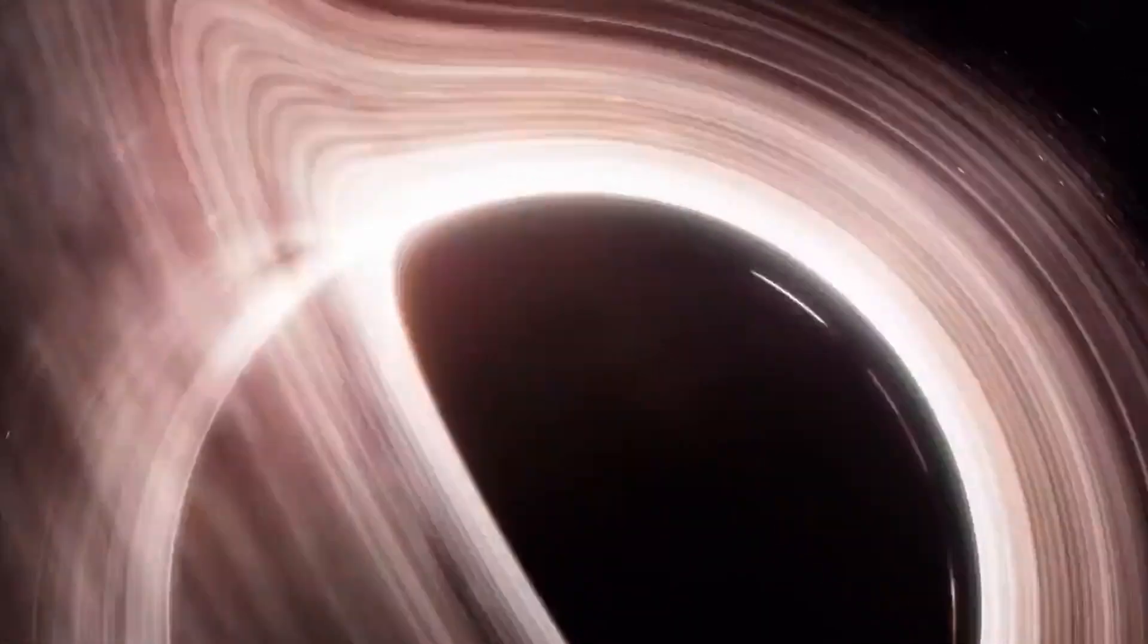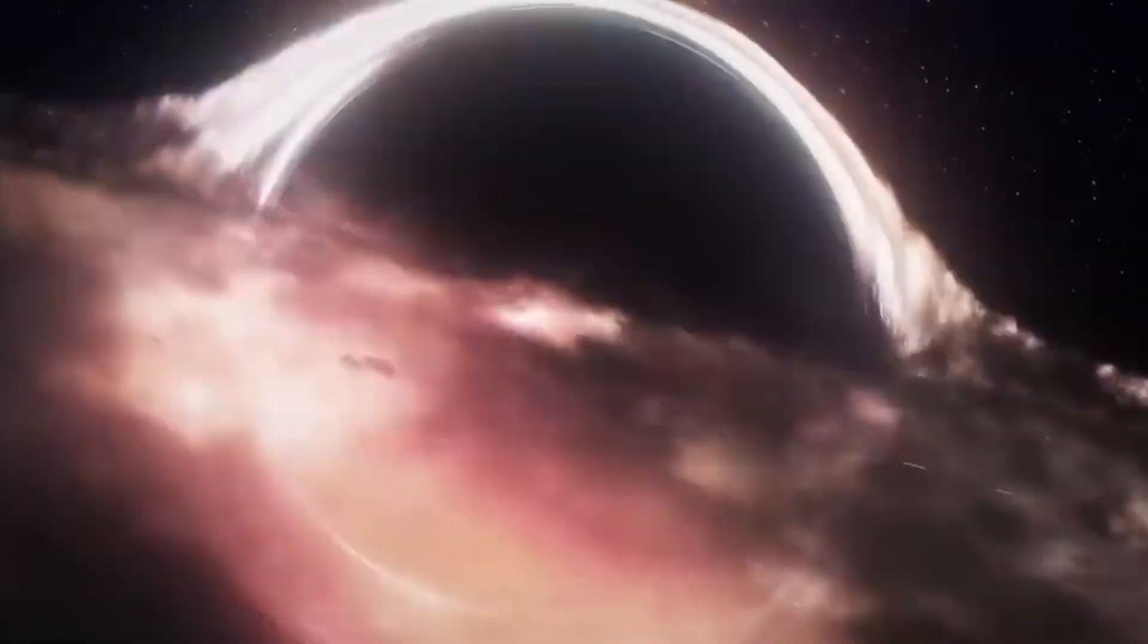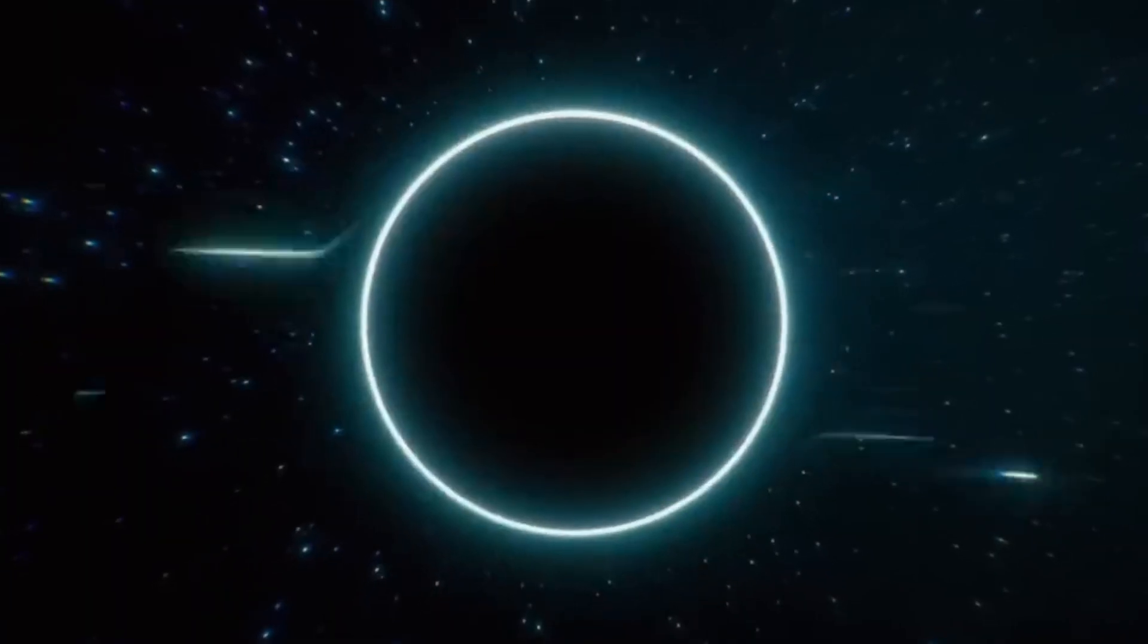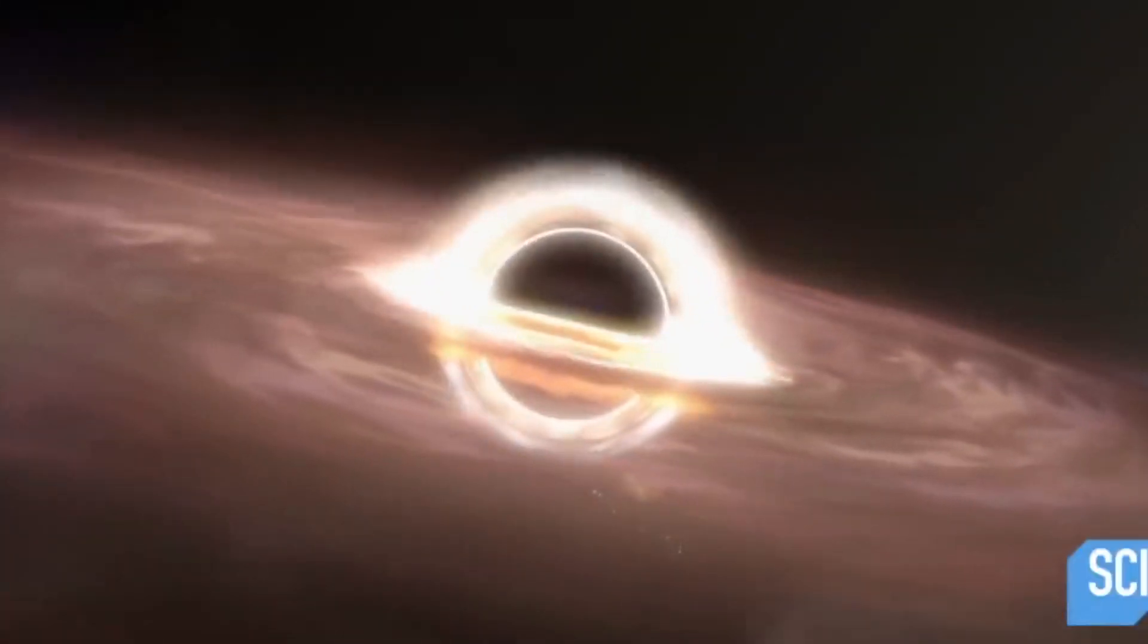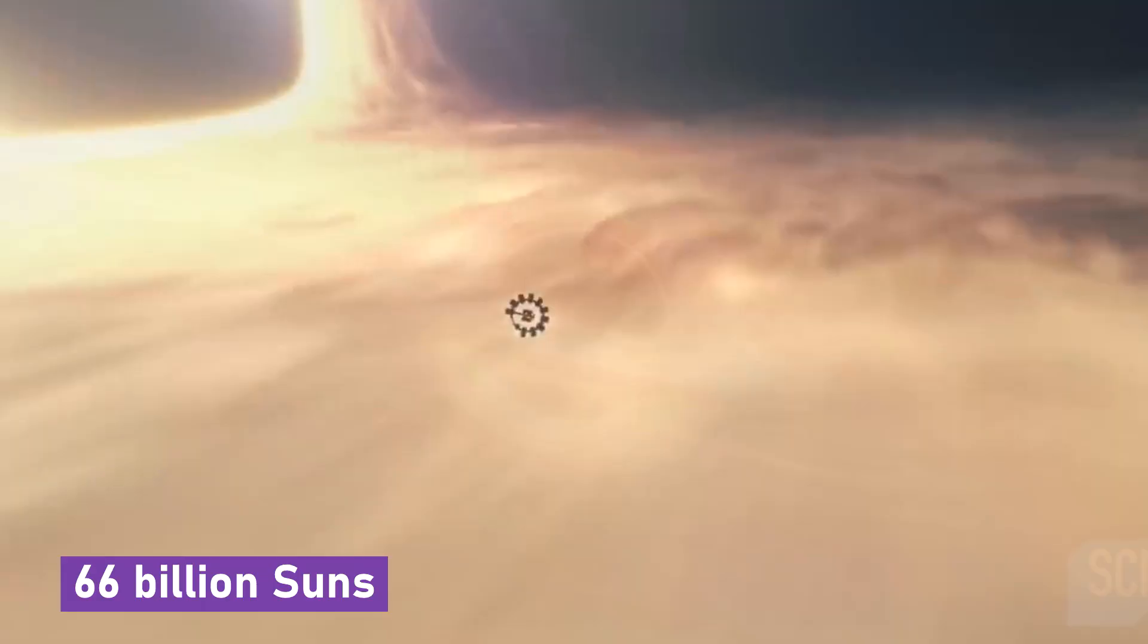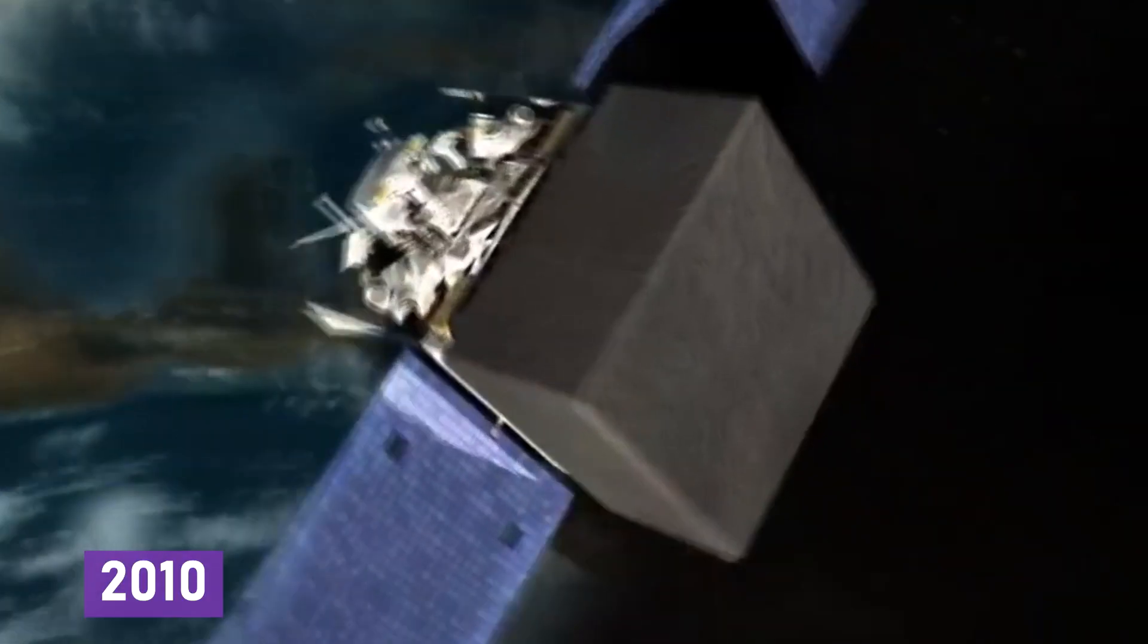The centers of galaxies are typically home to supermassive black holes, which can have masses millions or even billions of times that of our Sun. The TON 618 black hole is the most massive one astronomers have found, equivalent to 66 billion Suns.